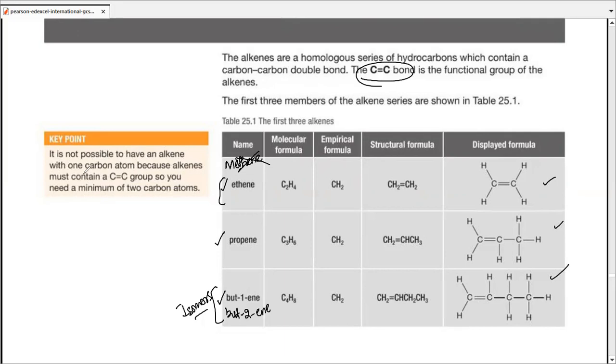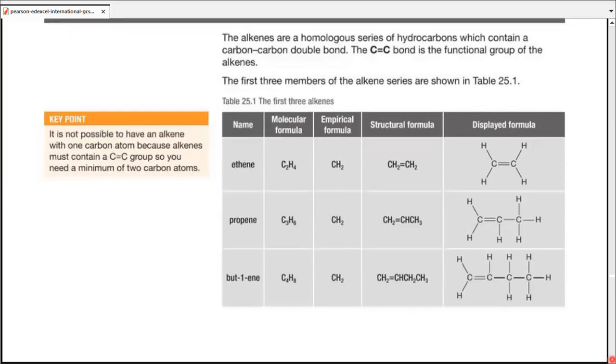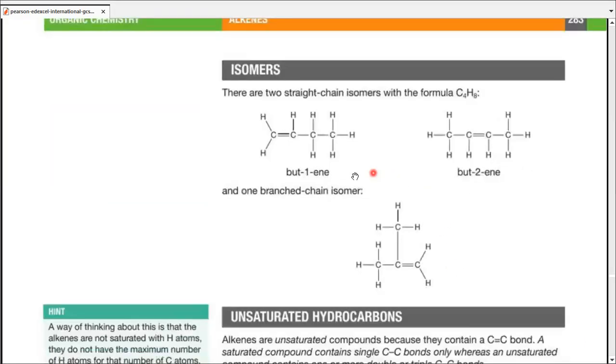So now, moving on, it is not possible to have an alkene with one carbon atom because alkenes have to have a carbon-carbon double bond, so methene does not exist. Now, moving on, isomers, but-1-ene and but-2-ene are isomers to one another, but they may have a branching isomer as well. So now, you have actually two rules for isomerism. The first rule is to move the functional group.